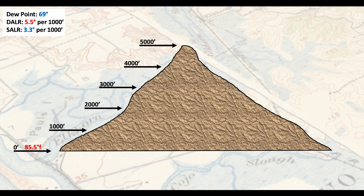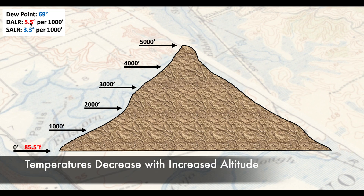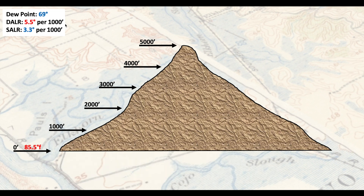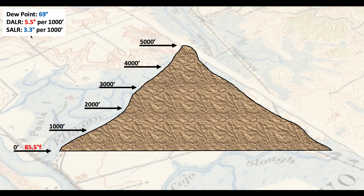I'm using red for 5.5 and blue for 3.3 to help distinguish the two rates. As we gain altitude going up the mountain, because the air is dry, temperatures decrease by 5.5°F for every 1,000 feet. But once you hit dew point, you have to use the saturated rate of 3.3. It's possible an air parcel could go up a mountain and never hit dew point, but in our case we will.